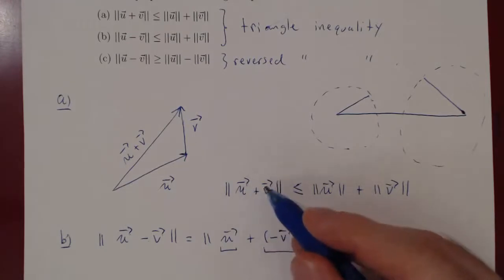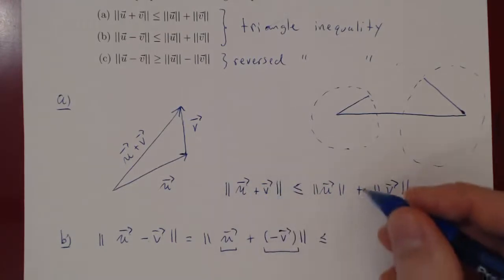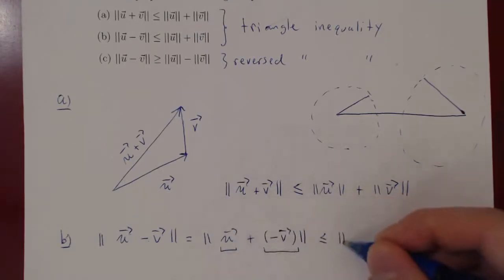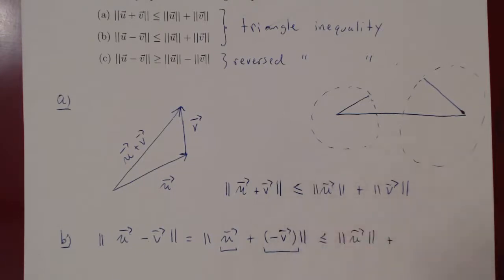So this is at most the norm of the first vector, norm of u, plus the norm of the second vector, which is negative v.